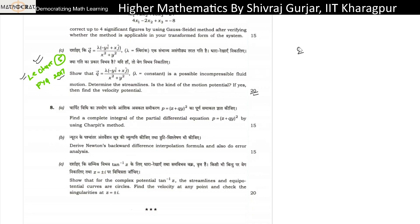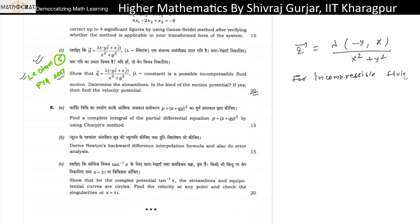We are given that the velocity vector is lambda times (minus y i + x j) divided by (x² + y²), where lambda is a constant, such that this is a possible incompressible fluid flow. For incompressible fluid, the continuity equation is: divergence of Q vector equals zero. Basically, if we can show this, then we say the flow is possible. If the continuity equation is satisfied for a given Q vector, then the fluid flow is possible.